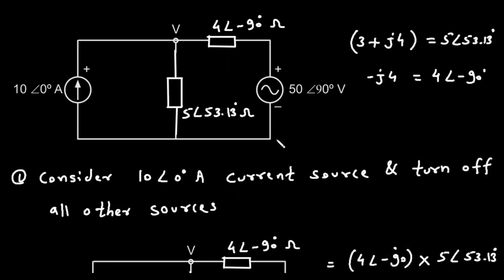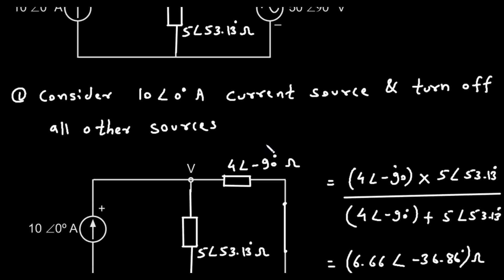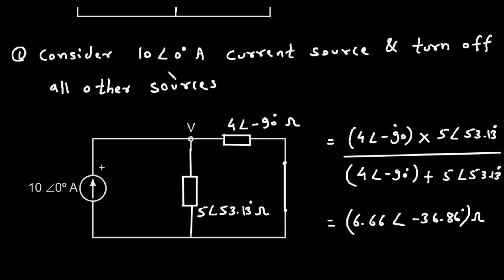Now, let's apply the superposition theorem. We'll break the problem into two parts. Part 1: consider the 10-amp current source only. We'll find the voltage V due to the current source alone. To do this, we must turn off the voltage source. We replace the 50-volt source with a short circuit. In this new circuit, we have the 10-amp current source connected to our two impedances, which are now in parallel with each other. The voltage across this parallel combination is what we'll call V'.